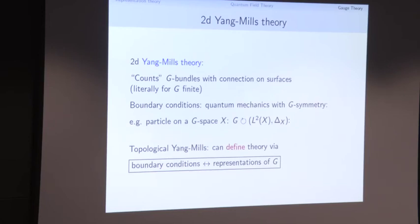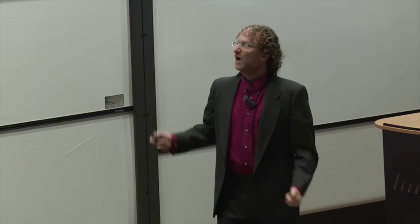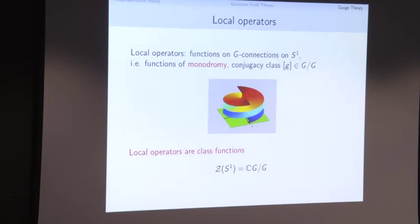In the topological setting we can use this as a definition: I define 2D Yang-Mills theory by declaring the category of representations of G to be the category of boundary conditions. So that field theory captures representations of the compact or finite group G. What are the local operators? We take a little circle and look at states on it. We're looking at G-connections on a little circle, which are determined by their holonomy — going around the circle gives an element of G.